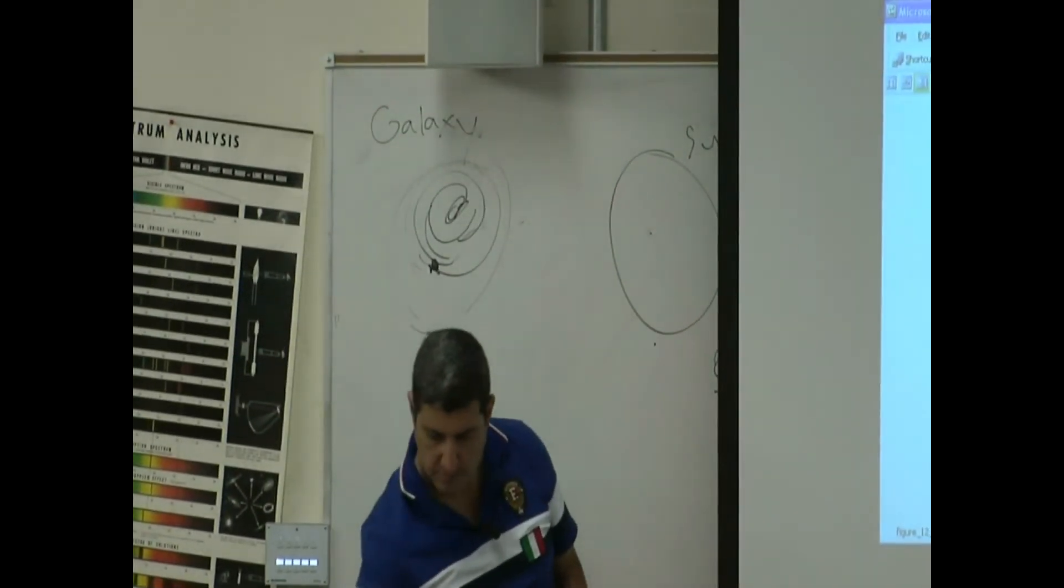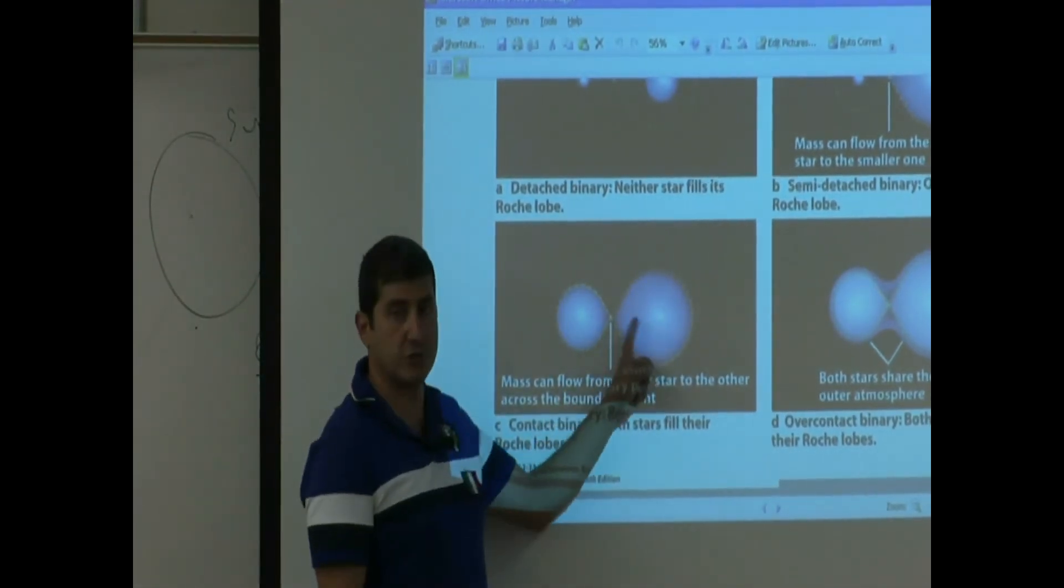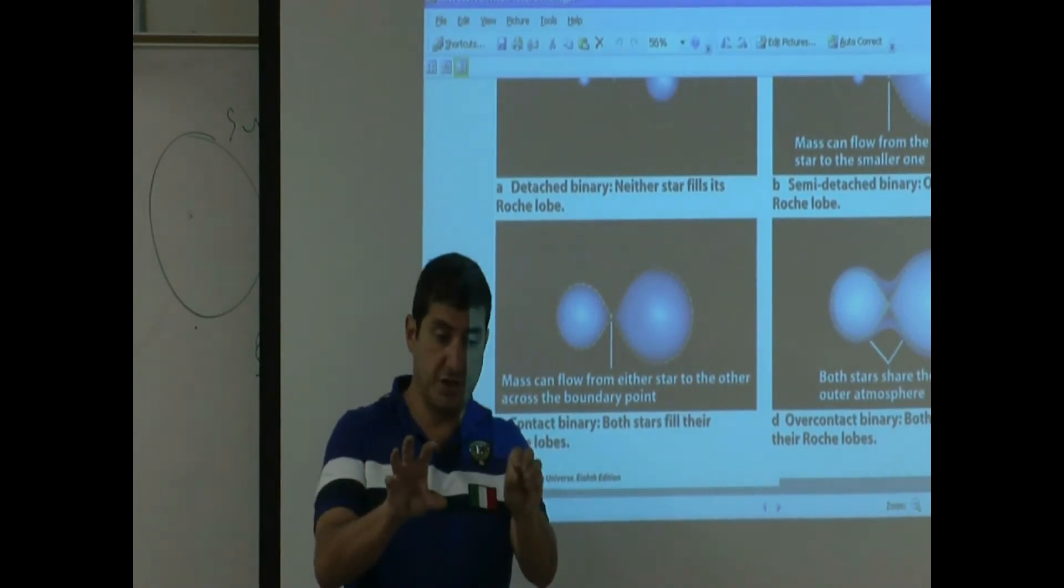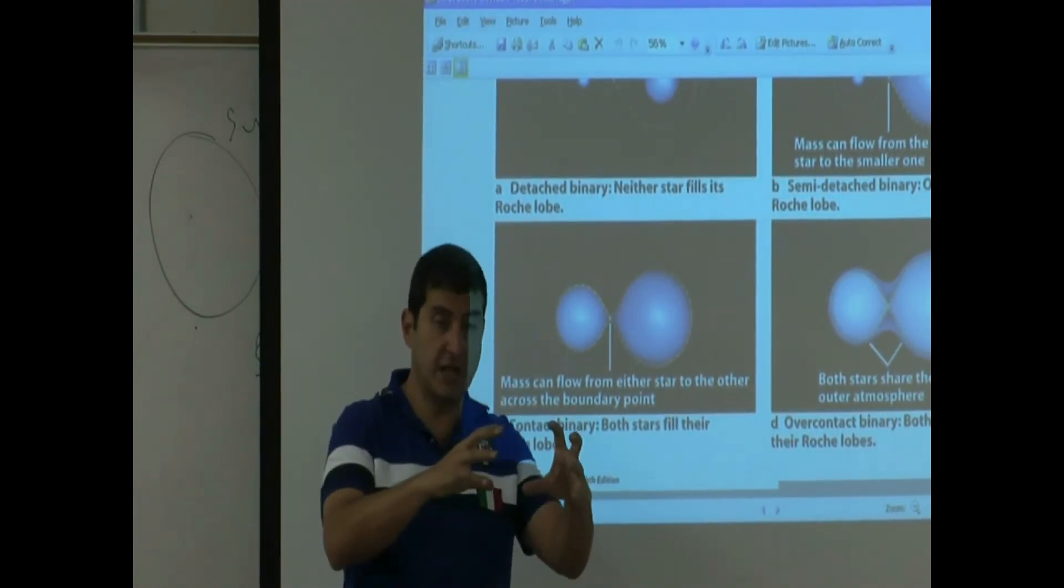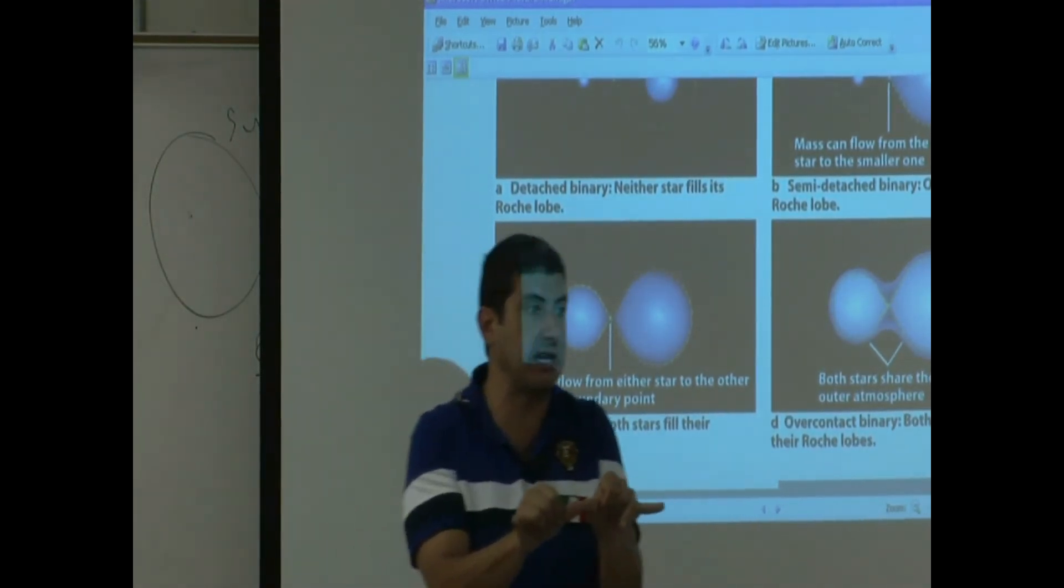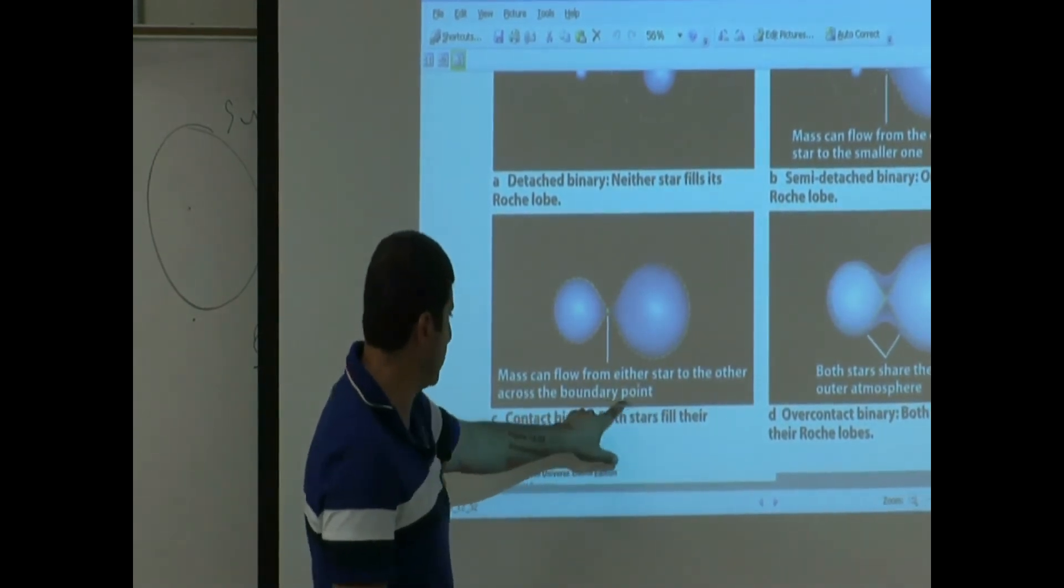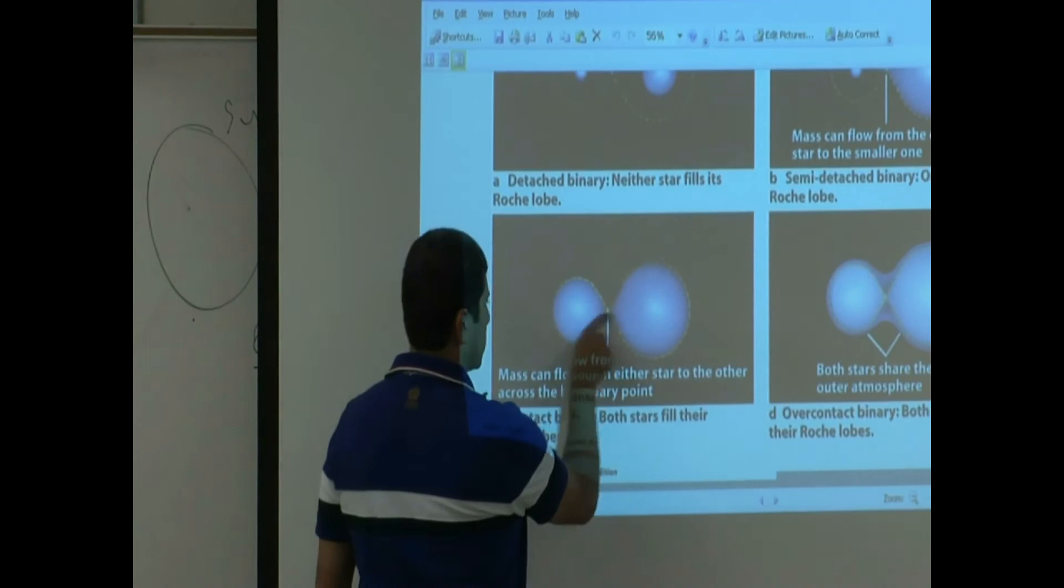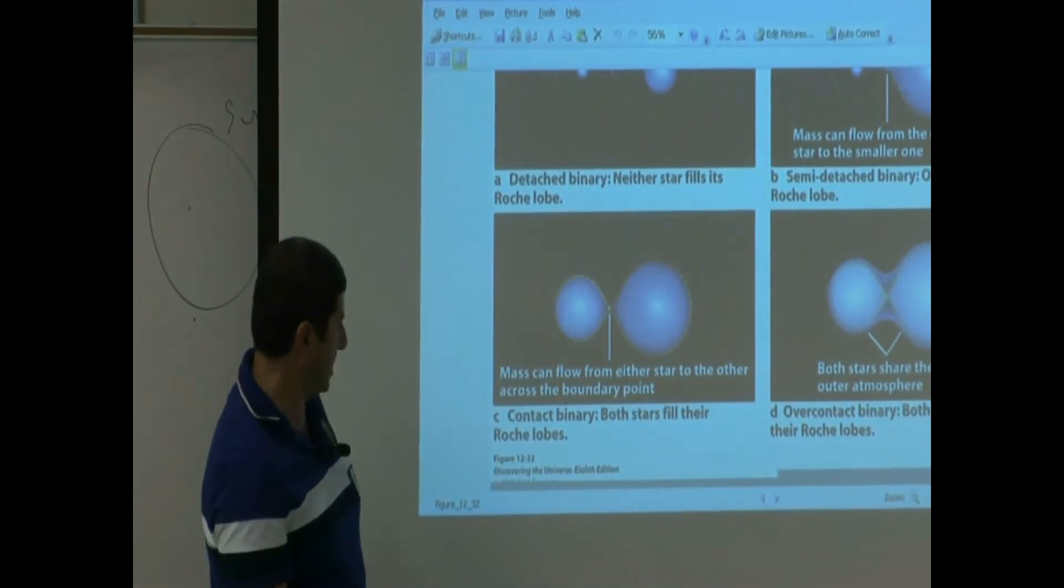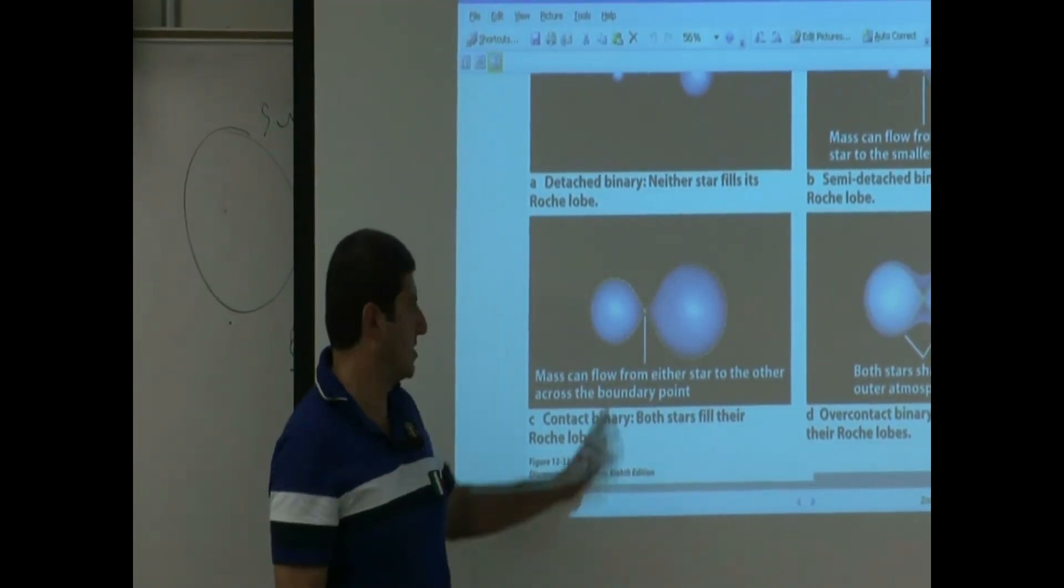And then here on the bottom, contact binary. Both stars fill their Roche lobe. These ones are rare to find because you have to find the star and another star, and they're both growing, and simultaneously they touch each other at one point. They fill their Roche lobes at the same time. Mass can flow from either star to the other across the boundary point. So this guy can feed this, this guy can feed this, and it can go both ways. So what kind of binary is that? Contact. They're contacting each other at one point. These are rare.